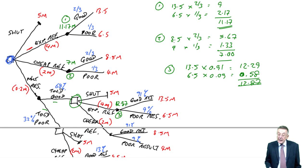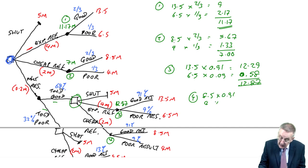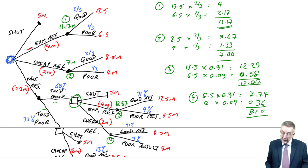Or, if we decide to do cheap. We'll pay out two million, another two million, but we'll get back either eight and a half or four. Again, probability is 0.91, 91%, or 9% 0.09 gives us 7.74 or 0.36. 8.1.